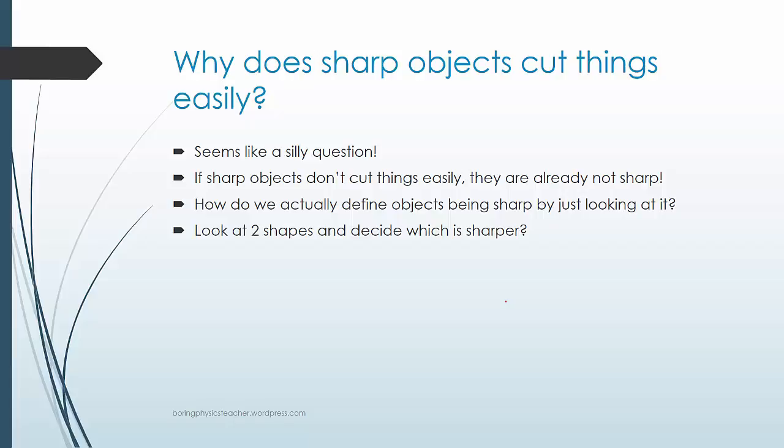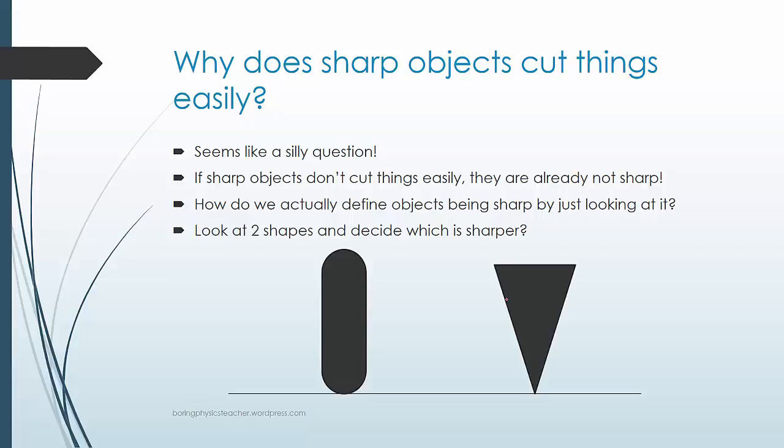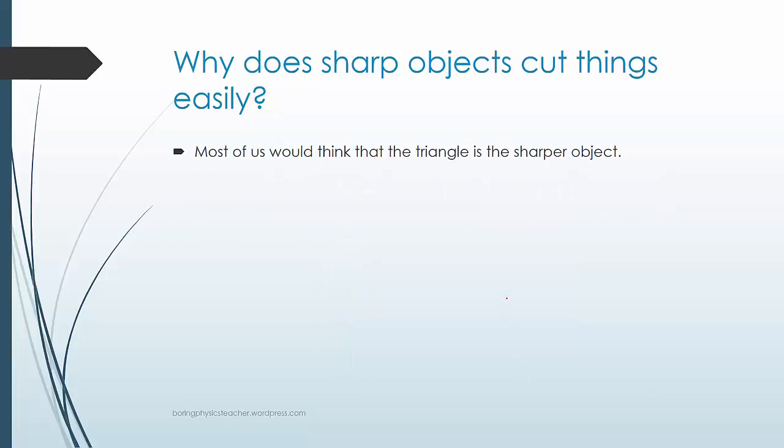Let's look at these two shapes and decide which is sharper. I'm sure you have easily made your decision. Most of us would think that the triangle shape is the sharper object. But again, why?